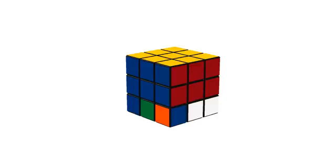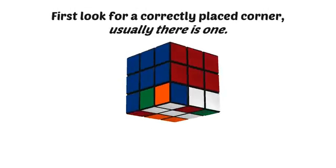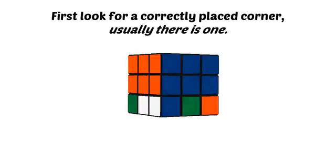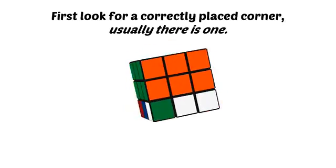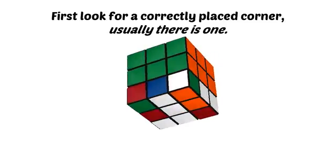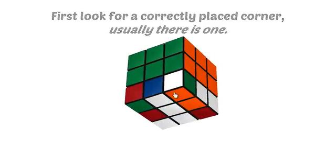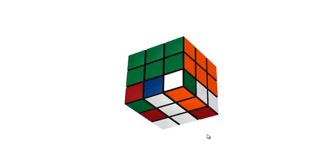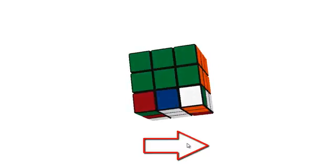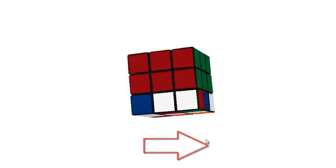Now let's take a look at the cube in front of us. We just finished the middle layer and we're going to look for a correctly placed corner, and there it is. Okay, green, white, and orange. So if this is correct, you're going to rotate the cube to the right and check this one.